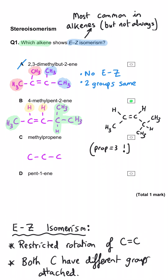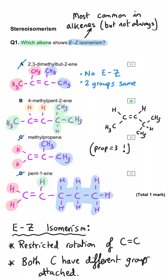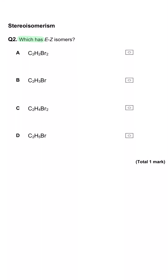Just to double-check: methylpropene has a chain of four, with the methyl group in the middle. The left carbon has two hydrogens and the right carbon has two methyl groups, so this will not have EZ isomerism. Pent-1-ene has the double bond on the end with two hydrogen atoms on the first carbon, so this will not have EZ isomerism either. Any terminal alkene hydrocarbon will not show EZ isomerism. So B is correct.